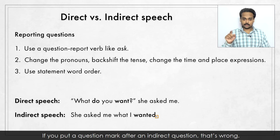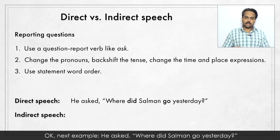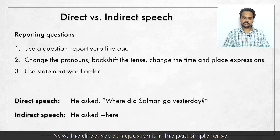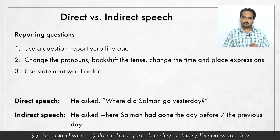Next example: He asked, "Where did Salman go yesterday?" We keep the question word "where". The direct speech question is in the past simple tense, which needs to get backshifted to the past perfect, and we put it in statement form. So: he asked where Salman had gone the day before or the previous day – both are OK. Notice that the verb "ask" can be used with or without an object – both are correct.